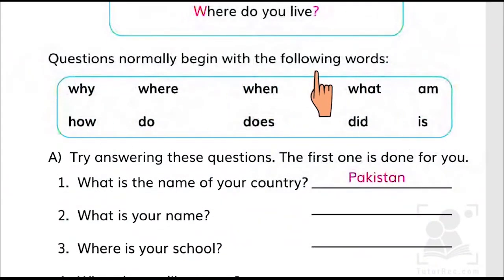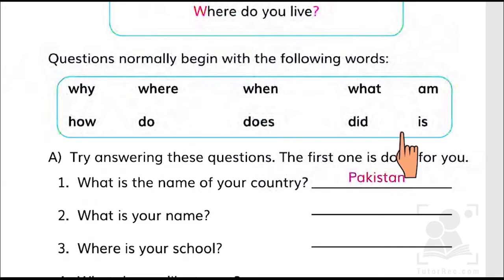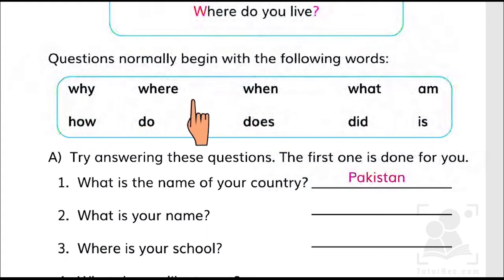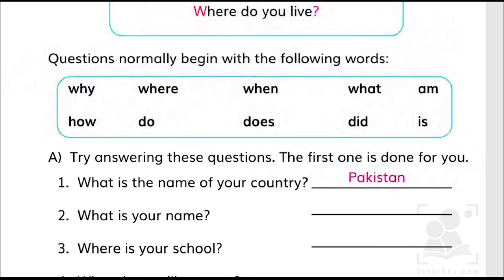Questions normally begin with the following words: why, where, when, what, am, how, do, does, did, and is. The words starting with 'wh' are called question tags or WH words. The rest — such as am, do, does, did, is — are called helping verbs or auxiliary verbs.